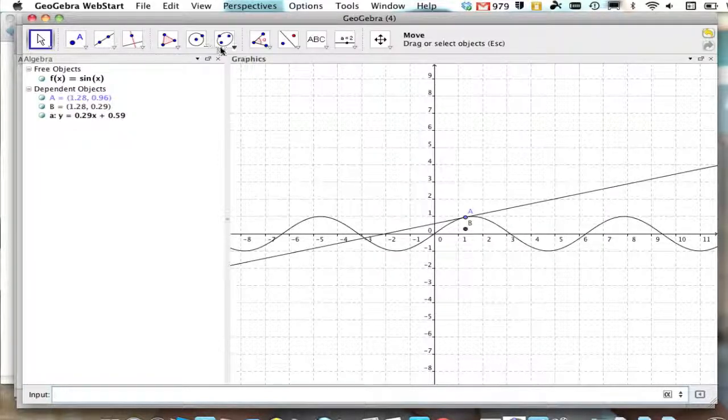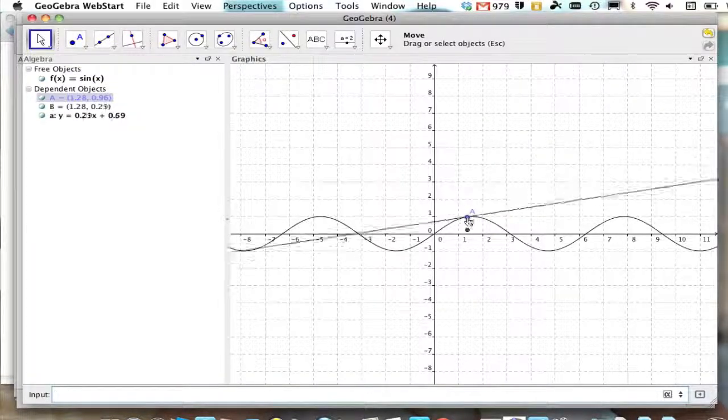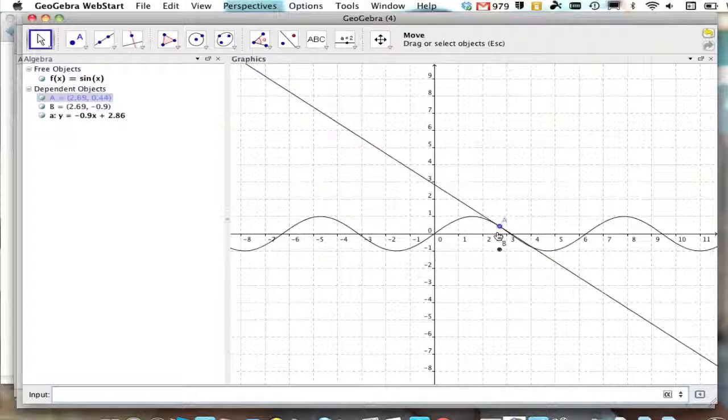Now, when I press enter, I get a point B that shows up. As I move A along, B is the slope.